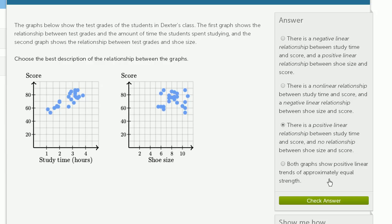Both graphs show positive linear trends of approximately equal strength. No, not at all, this one doesn't show a linear relationship of really any strength.